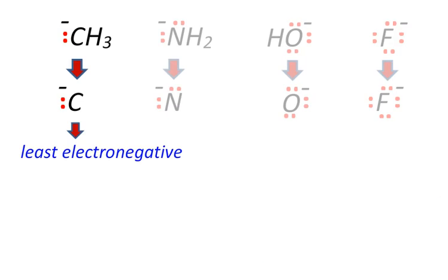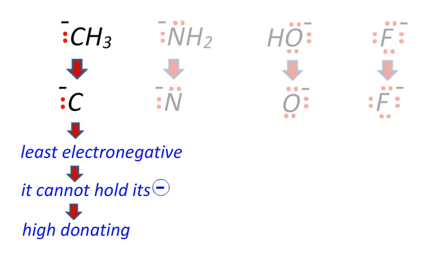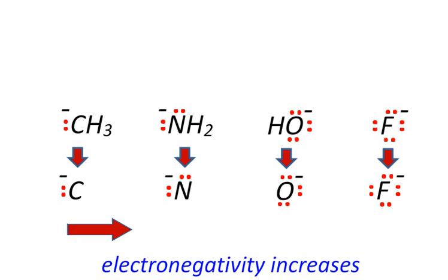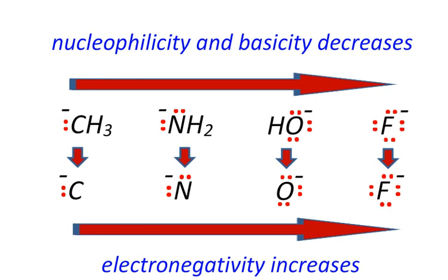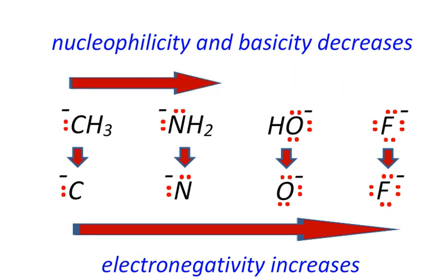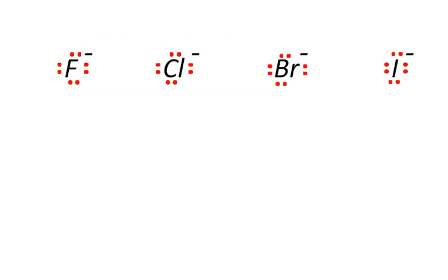Carbon, on the other hand, is the least electronegative atom in this group, and then it cannot hold its negative charge at all, and its ability to donate its electrons is very high. So carbon is the best nucleophile and base among these molecules. Bottom line: as electronegativity increases, nucleophilicity and basicity decrease.